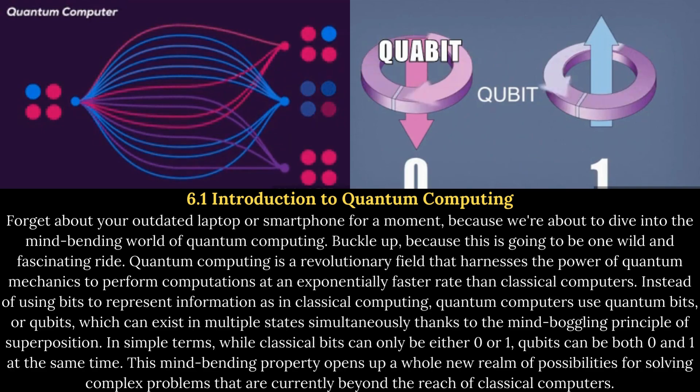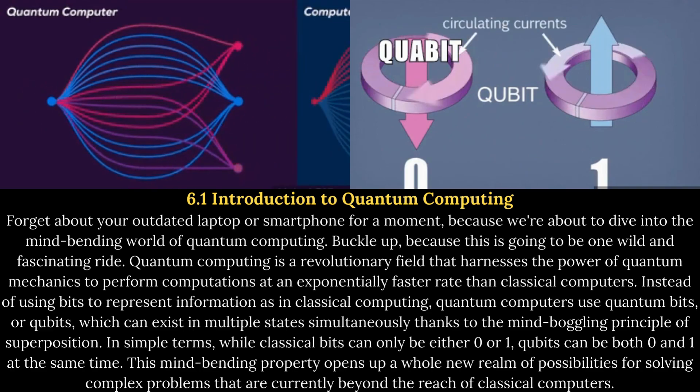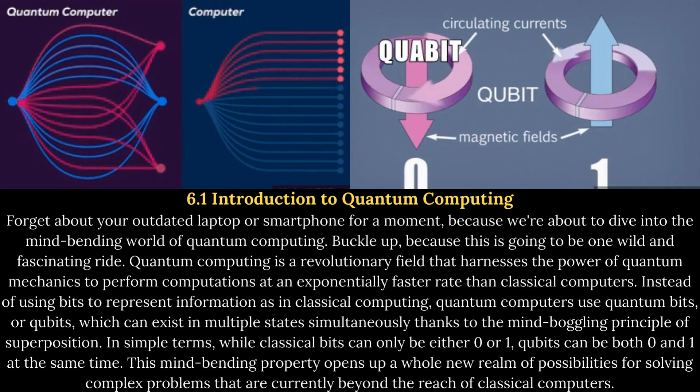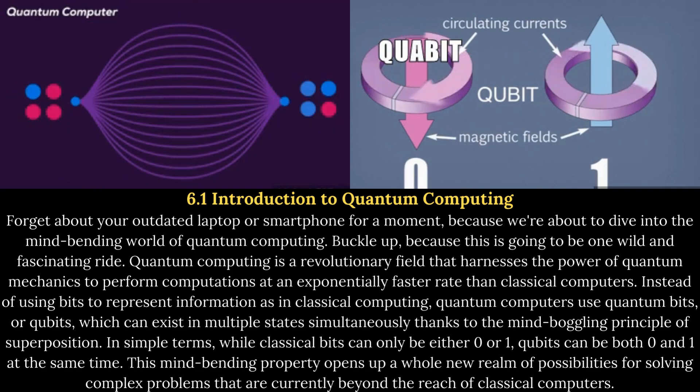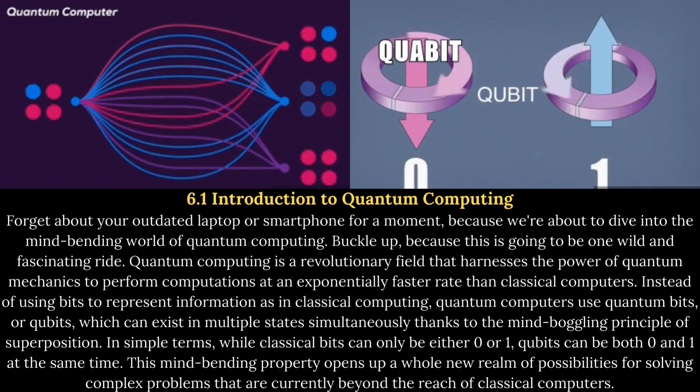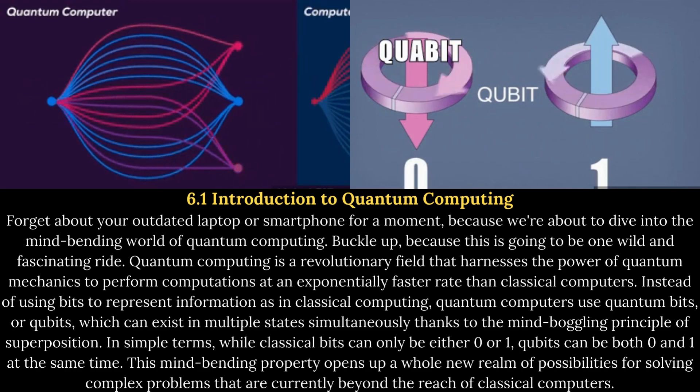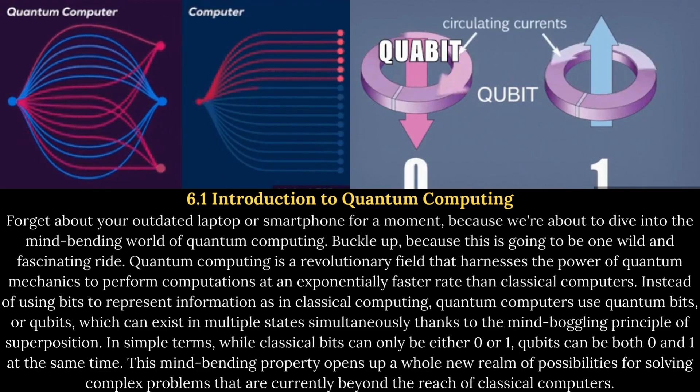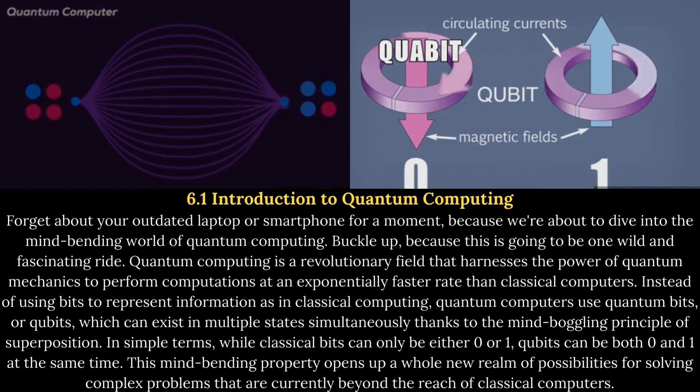which can exist in multiple states simultaneously thanks to the mind-boggling principle of superposition. In simple terms, while classical bits can only be either 0 or 1, qubits can be both 0 and 1 at the same time. This mind-bending property opens up a whole new realm of possibilities for solving complex problems that are currently beyond the reach of classical computers.